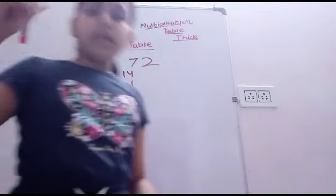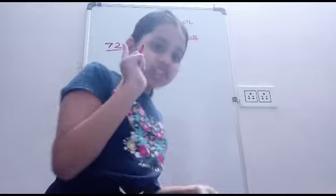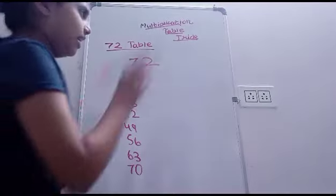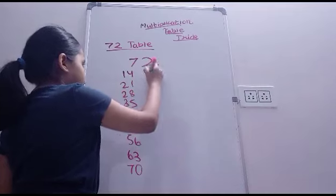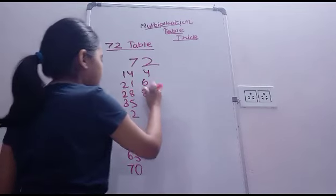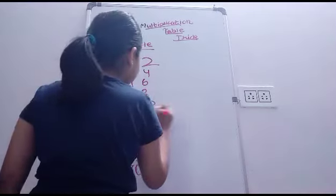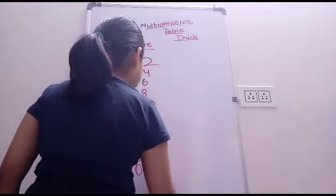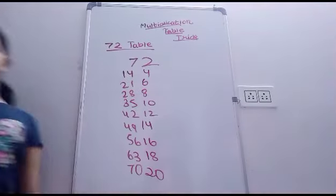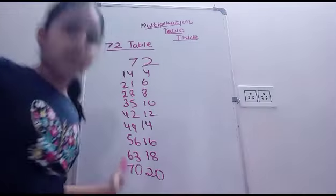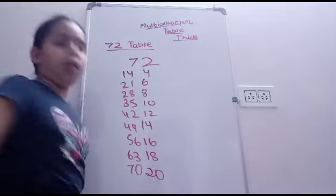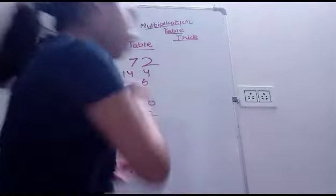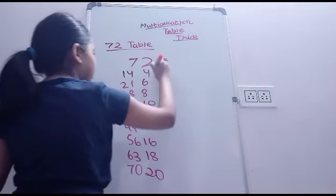Now we also know this 2 table. Even a one year child knows 2 table. Okay, 2 times 1 is 2, 2 times 2 is 4, 2 times 3 is 6, 2 times 4 is 8, 2 times 5 is 10, 2 times 6 is 12, 2 times 7 is 14, 2 times 8 is 16, 2 times 9 is 18, and 2 times 10 is 20. Now without further ado we will write now more.